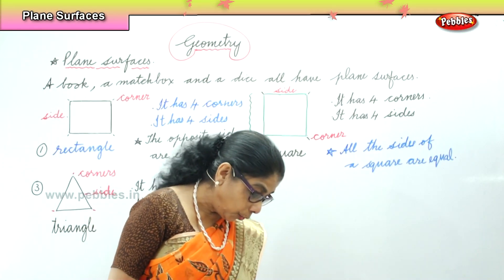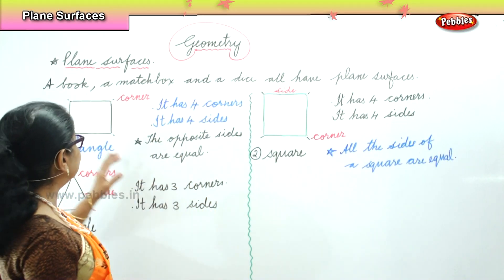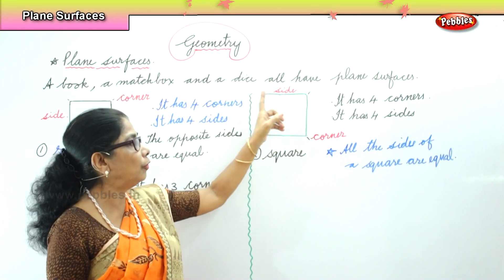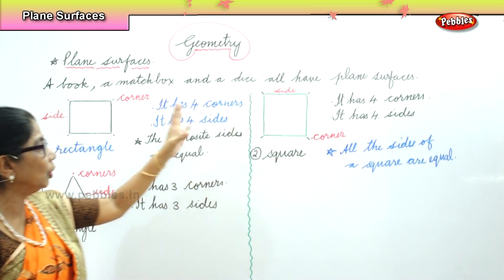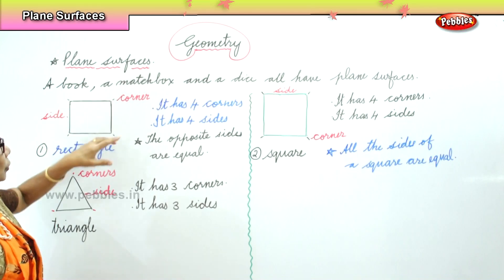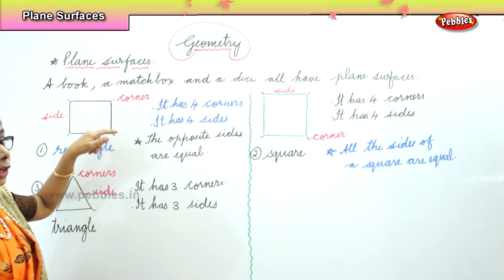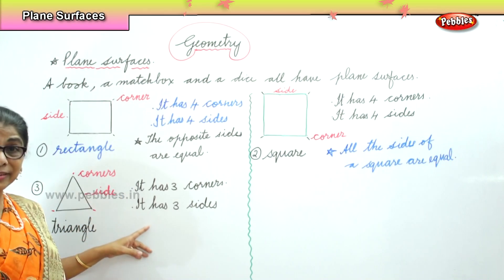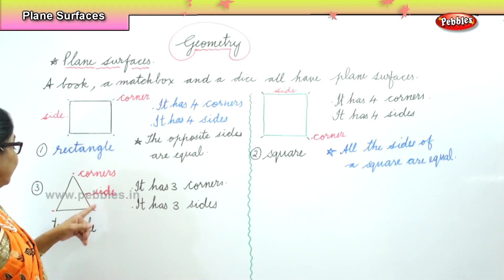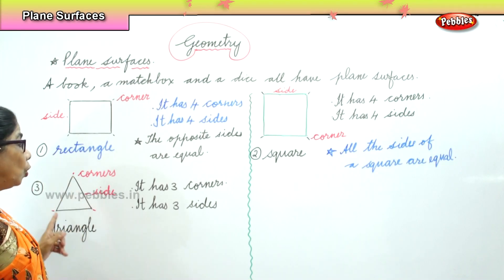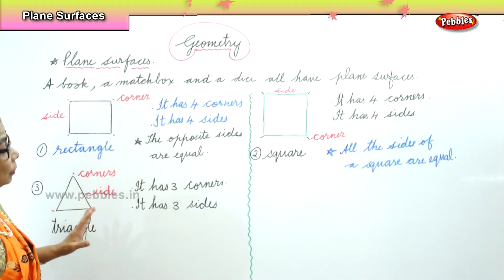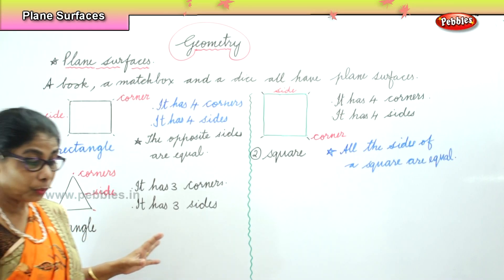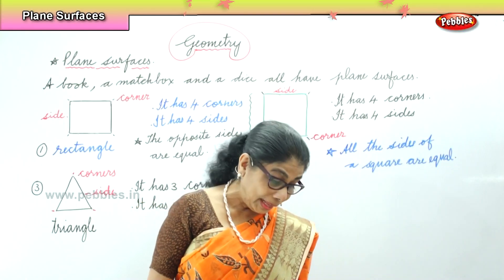So what do we remember now? We call them corners or edges. A square has four sides, four corners, and all sides of the square are equal. A rectangle has four corners, four sides, and the opposite sides are equal. A triangle has three corners and three sides. This is a plane surface, and we see these plane figures in nature all around us.